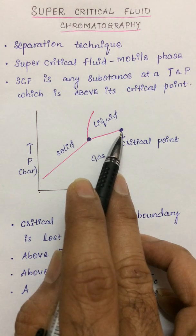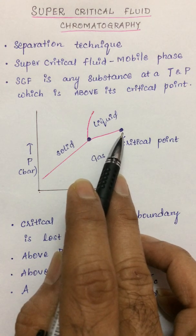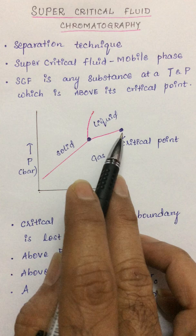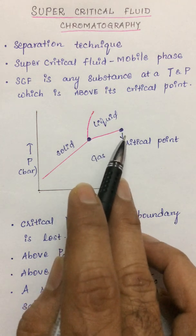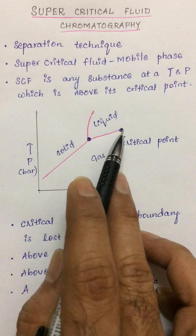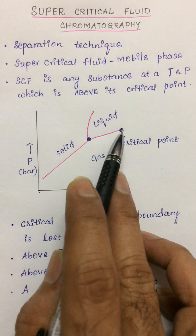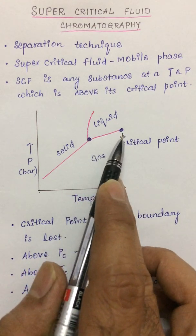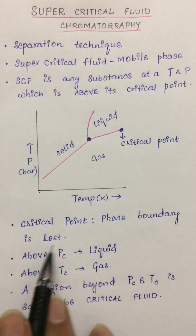So this point is called as a critical point. Simply to define, a critical point is a point where the boundary between the two phases, the liquid phase and the gas phase, is completely lost. At critical pressure, at the critical point, the phase boundary is lost.